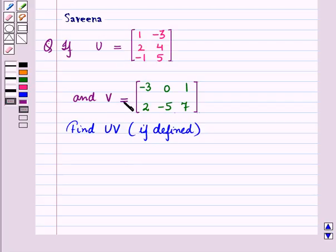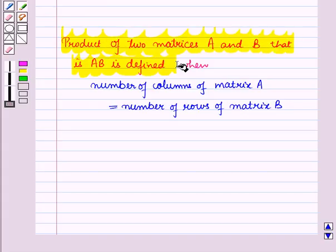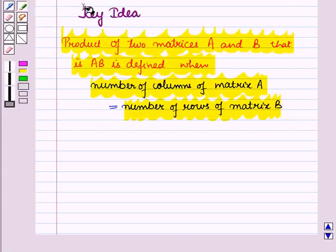Before starting the solution, we should know a key result: the product of two matrices A and B, that is AB, is defined when the number of columns of matrix A is equal to the number of rows of matrix B. This result will work as the key idea for solving the given question.